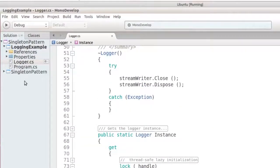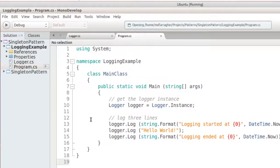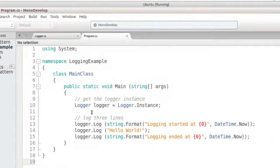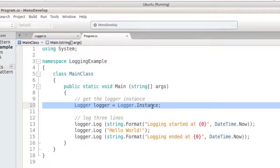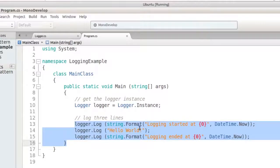And finally, here is the main program method. You can see that I use the static instance property to access the logger. And then I use it to write three lines to the log file.